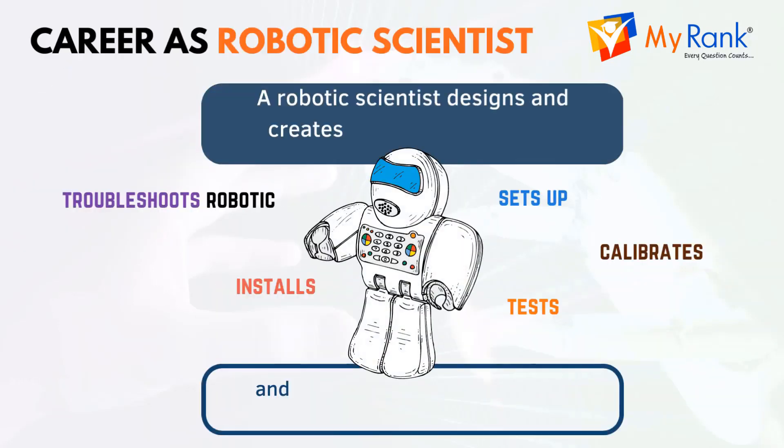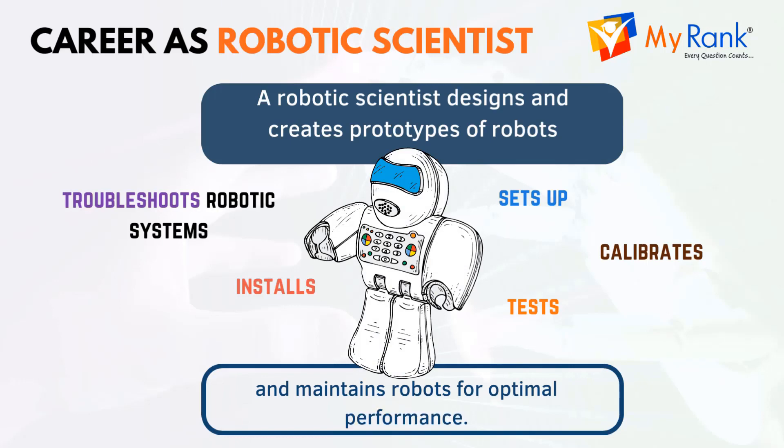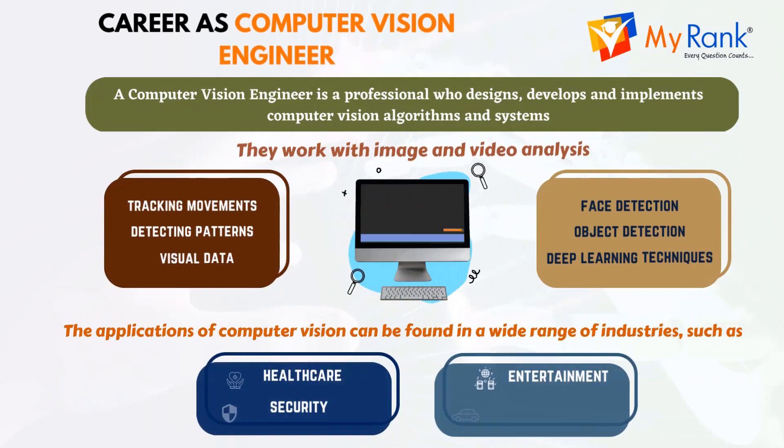Career as a robotic scientist. A robotic scientist designs and creates prototypes of robots, sets up, configures, tests, and troubleshoots robotic systems, installs, calibrates, and maintains robots for optimal performance. They ensure that robotic machines function safely, consistently, and with accuracy, and continuously work towards improving and refining their design through modification.